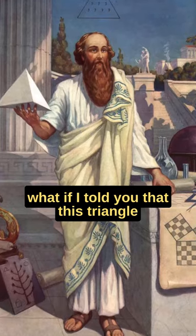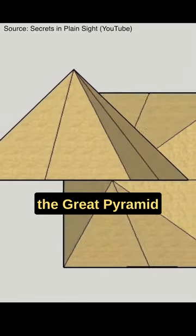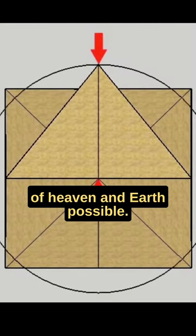Now, what if I told you that this triangle is actually part of the Great Pyramid of Giza? The apithym to base ratio of the Great Pyramid makes the metaphysical marriage of Heaven and Earth possible.